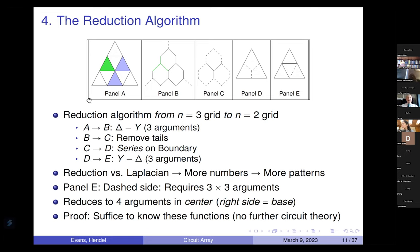In panel A we have a three-grid — three rows of equilateral triangles. We go through four steps, A to B, B to C, C to D, and D to E, and we end up with a two-grid. That's called reduction. The first step: take every triangle and convert it to a Y, so there are six upright triangles and six upside-down Ys. Going from B to C, we remove the tails — simply edges with one vertex of degree one, which doesn't affect the resistance. Going from C to D, we straighten out the dashed boundary lines using a series transformation, just adding resistances.